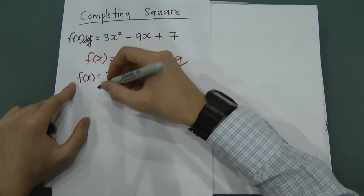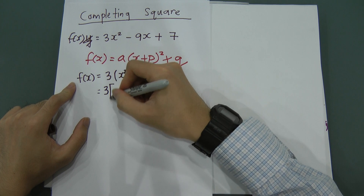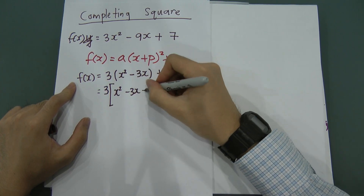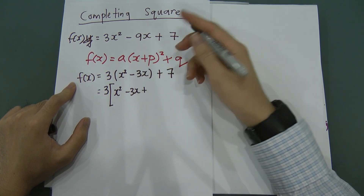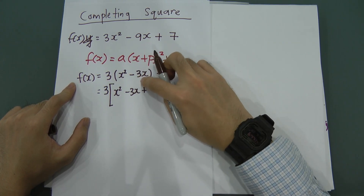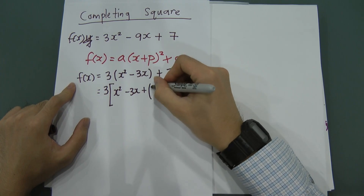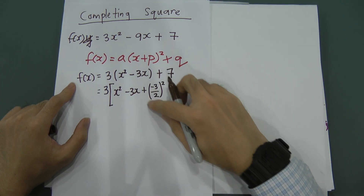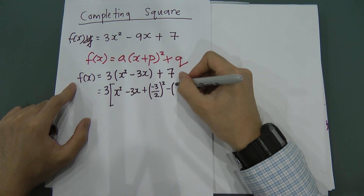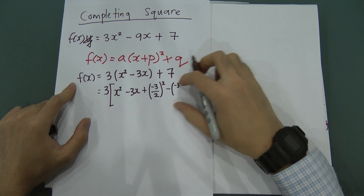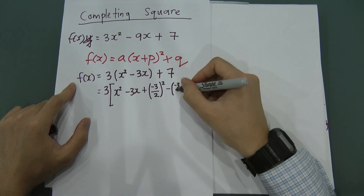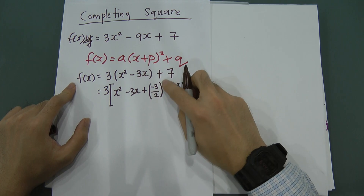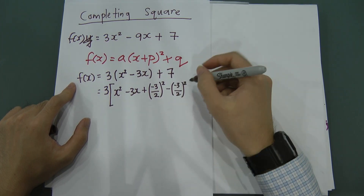Now the important part: inside the bracket I have x² - 3x. I need to add the middle coefficient divided by 2, squared — so that's (-3/2)². When I add this, I must also subtract it back so the equation stays balanced. So I add (-3/2)² and then minus (-3/2)² as well.